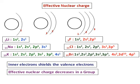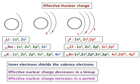Now let's consider what happens in a period. Take lithium and fluorine — they belong to the same period. Lithium is 1s², 2s¹ and fluorine is 1s², 2s², 2p⁵. There is no increase in the principal quantum number, so whatever electrons are added for fluorine go into the same level. The effective nuclear charge is increasing but the level doesn't change. Hence, effective nuclear charge increases in a period. Remember: effective nuclear charge decreases in a group and increases in a period.